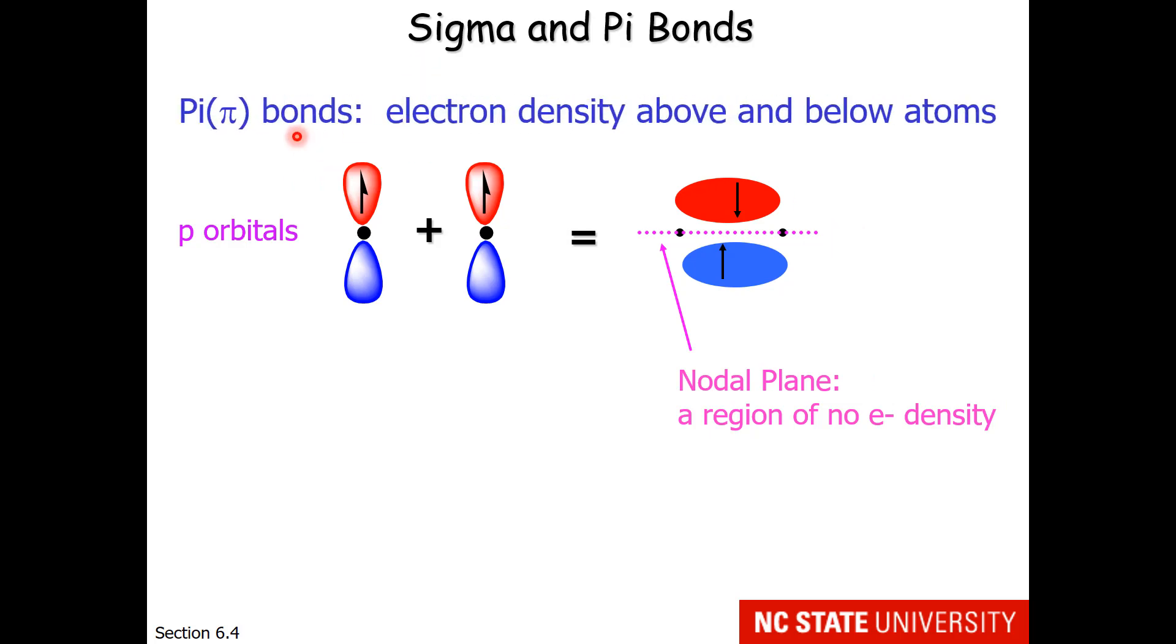These are known as pi bonds. The electron density is above and below the atoms, and the two electrons in the bond might be found either above or below the nodal plane. So how this is different is that the nuclei can see each other. Instead of the nuclei glued together, it's more like a clasp that goes above and below the nuclei.